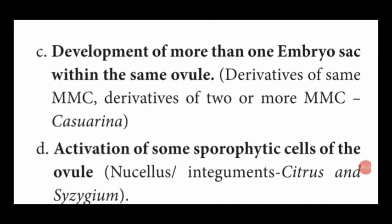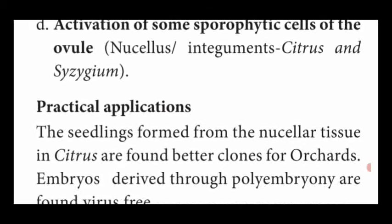The third type of polyembryony: development of more than one embryo sac. Normally only one embryo sac is present inside the plant parts. But in some plants they are producing more than one embryo sac within the same ovule. These embryo sacs are produced from the megaspore mother cell derivatives - from the same megaspore mother cell or from one or more megaspore mother cells. Example: Casuarina. These plants show more than one embryo sac within the same ovule.